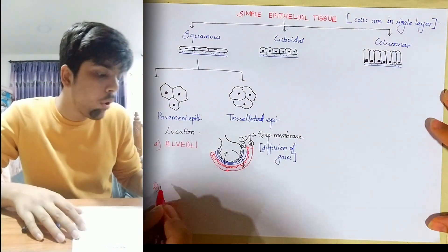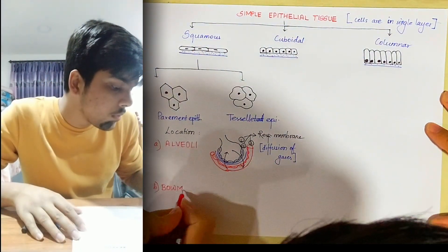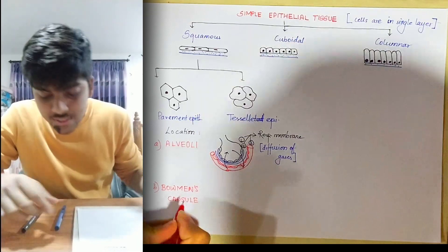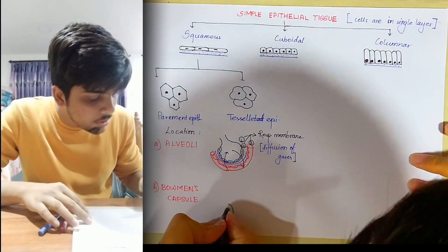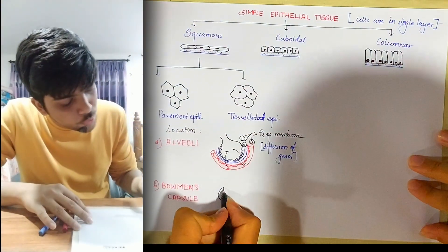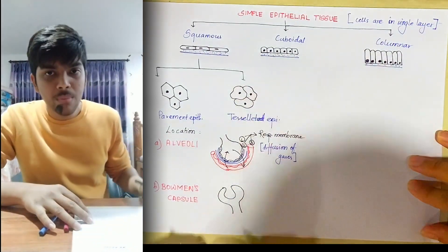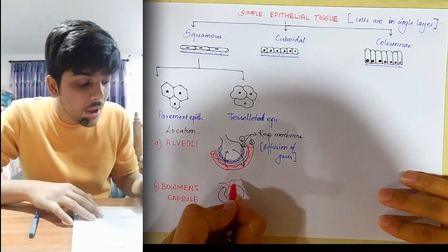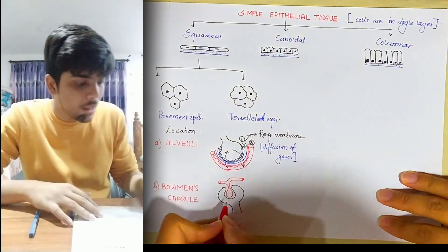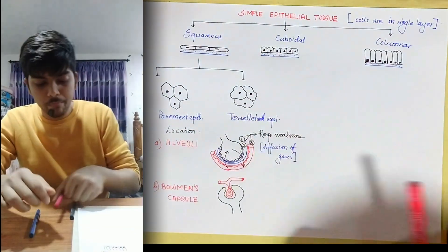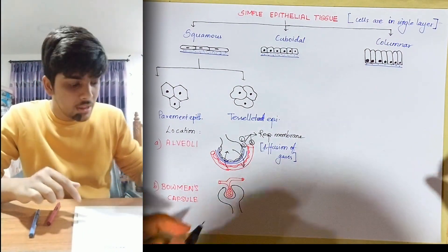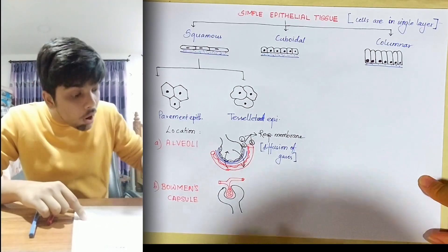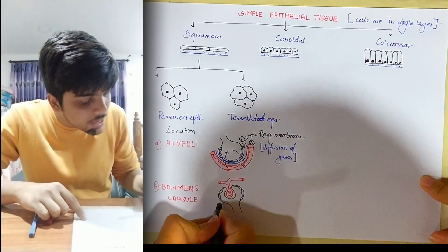B — B for Bowman's capsule. Bowman's capsule is a part of the nephron, which is the basic functional unit of your kidney. Within the Bowman's capsule there is the glomerulus, which is also a capillary. The parietal wall of the Bowman's capsule — the outer wall is the parietal wall and the inner wall is the visceral wall — the parietal wall of the Bowman's capsule is lined by simple squamous epithelium.